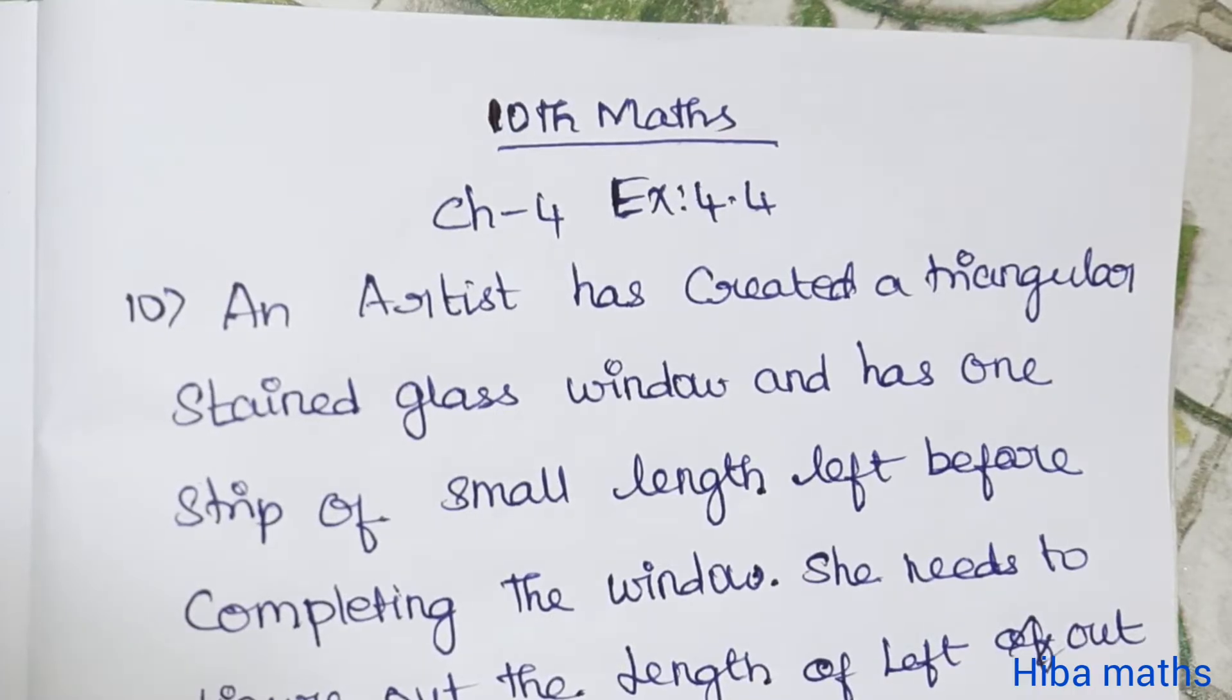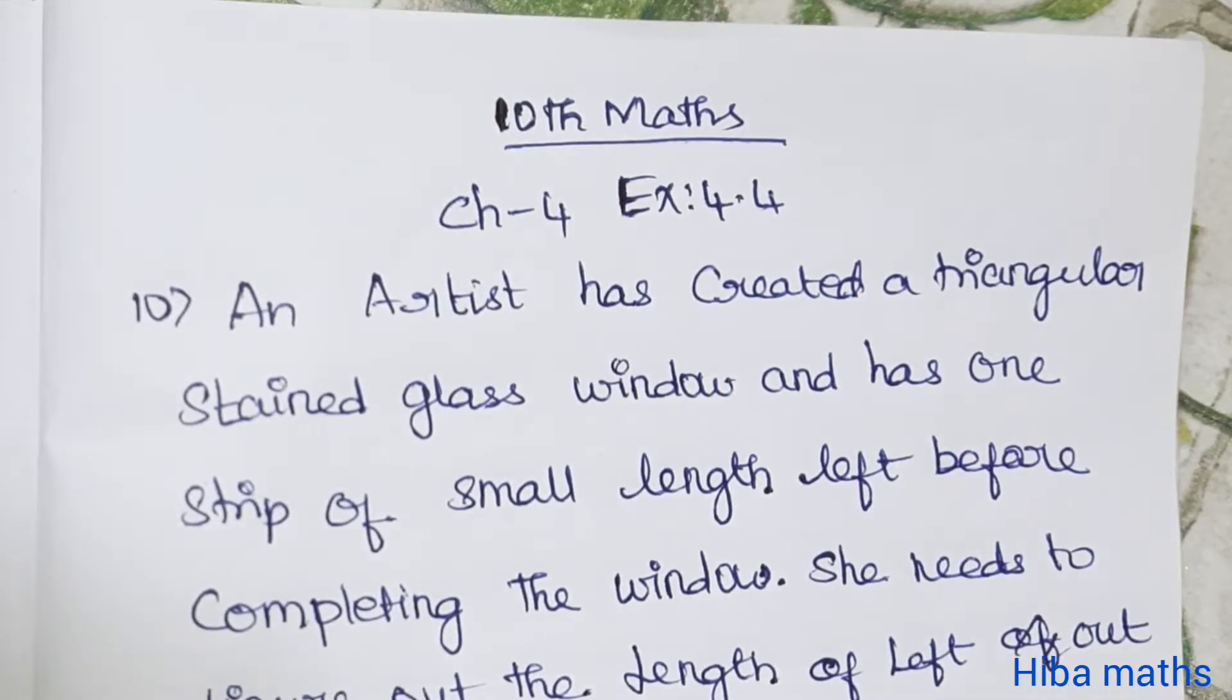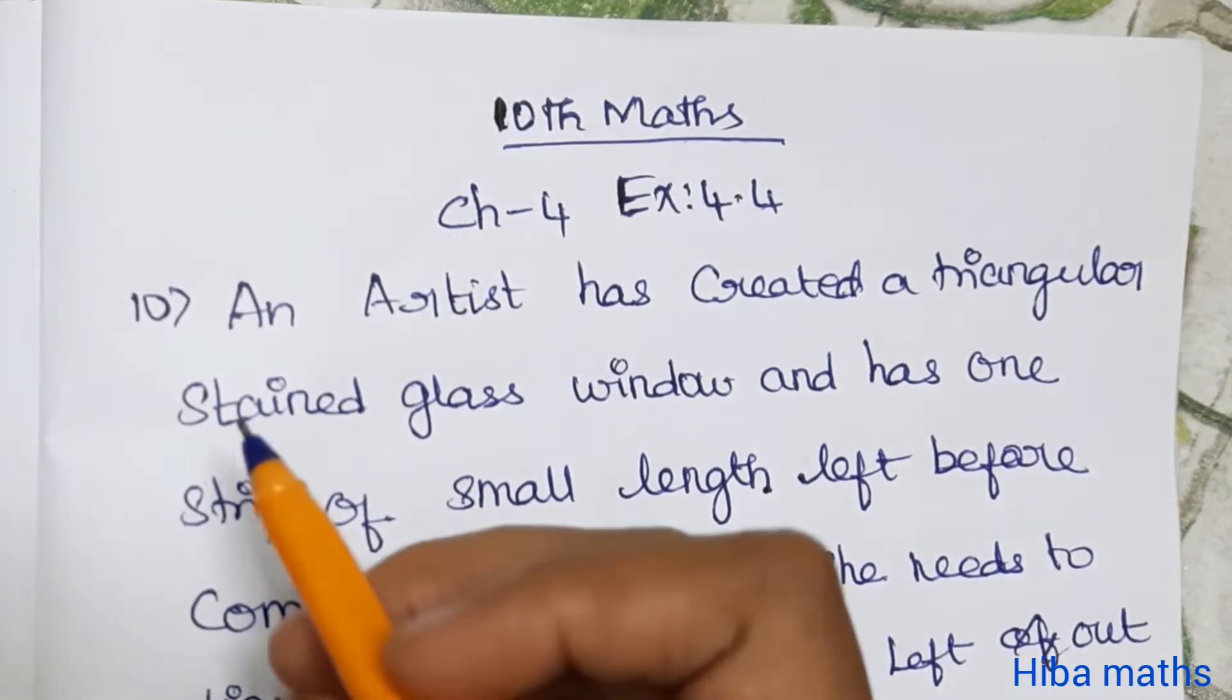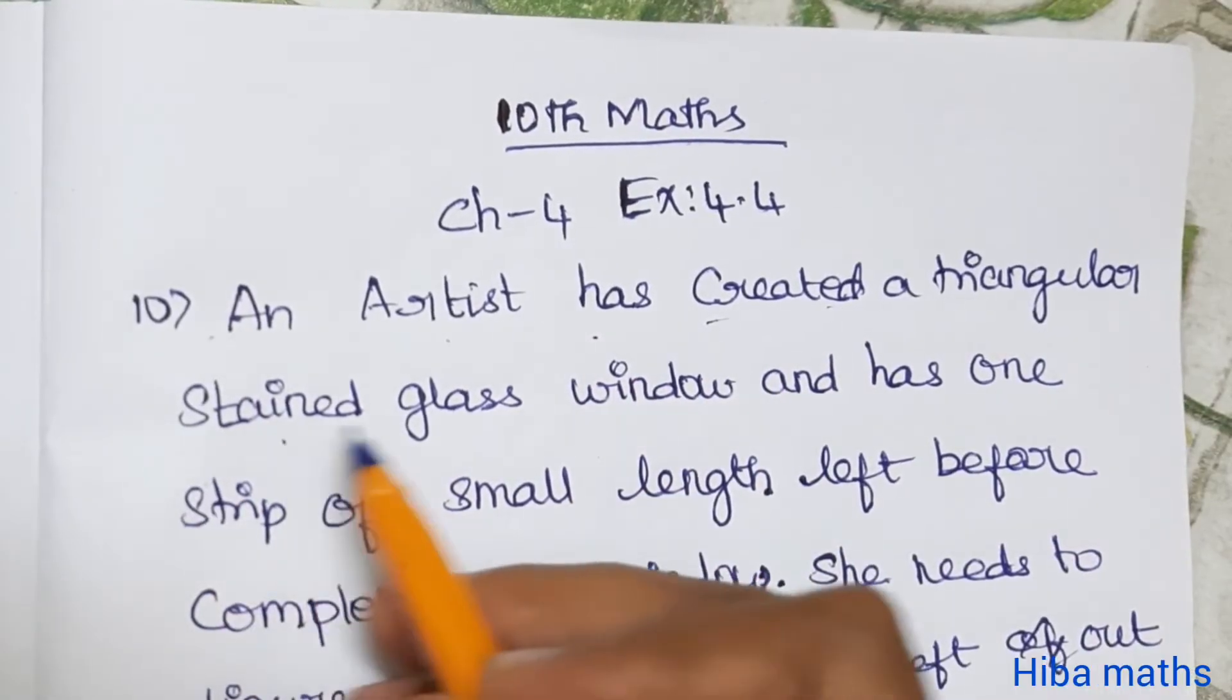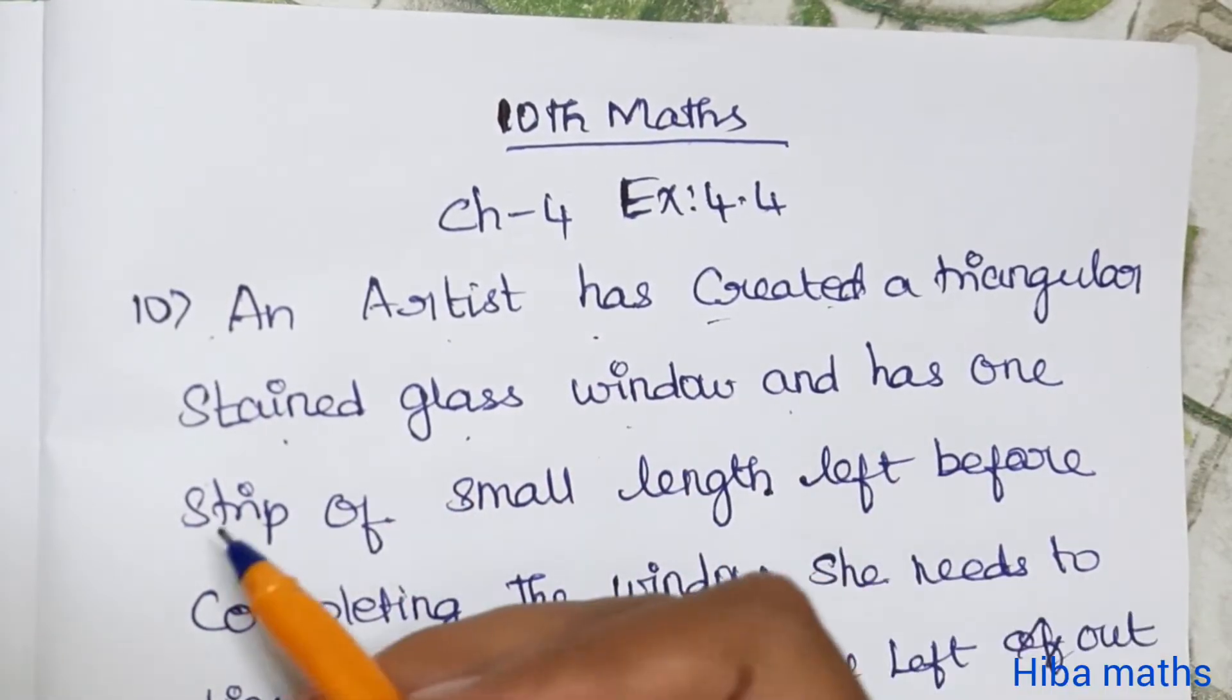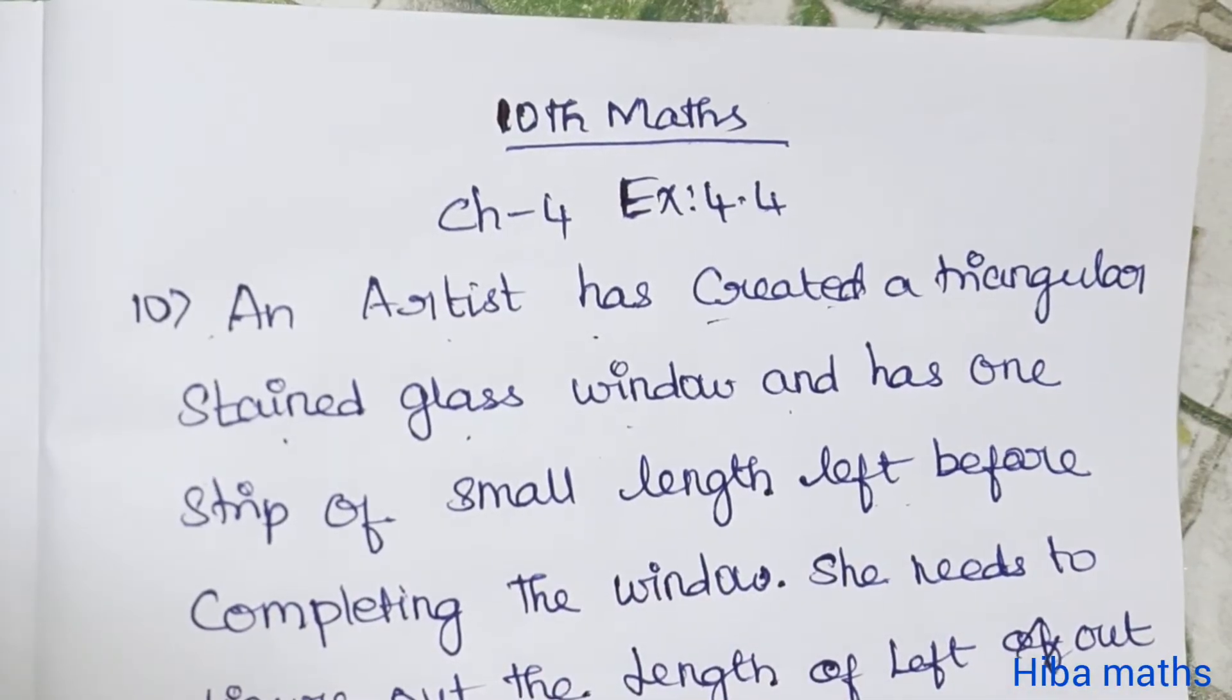Hello everyone, welcome to Hibamax. 10th standard math, chapter 4, exercise 4.4, question 10. An artist has created a triangular stained glass window and has one strip of small length left before completing the window.